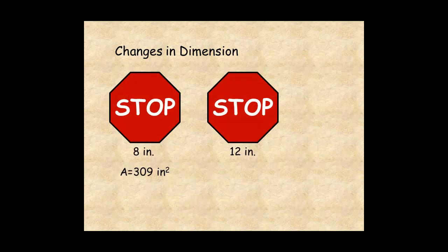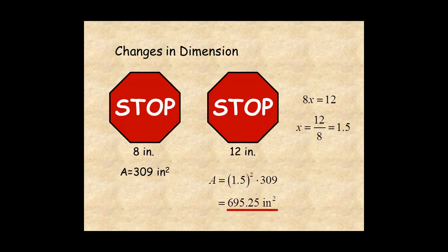In this example, the two signs are hexagons. The sign on the left has a side length of 8 inches, an area equal to 309 square inches. In order to find the factor of change, ask yourself, 8 times what number equals 12? Divide 12 by 8, and the factor of change is 1.5. Then the area of the larger sign on the right is 1.5 squared times 309, or 695.25 square inches.